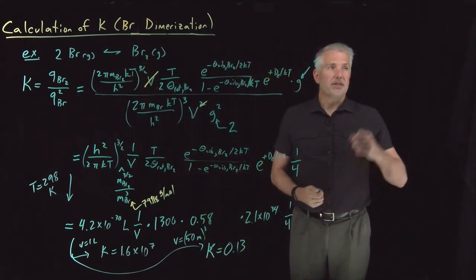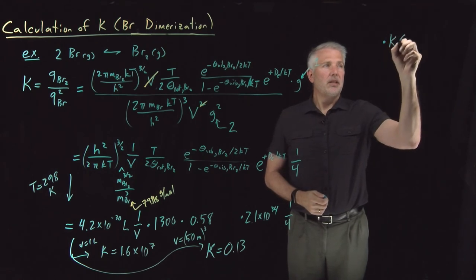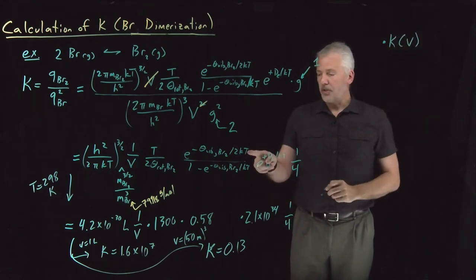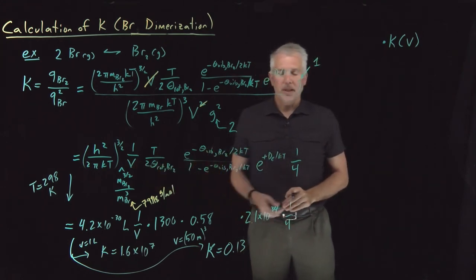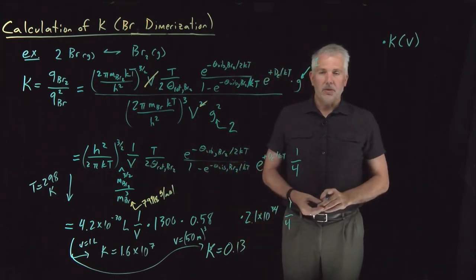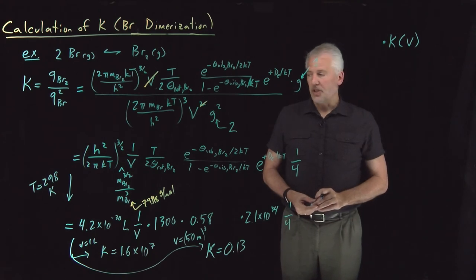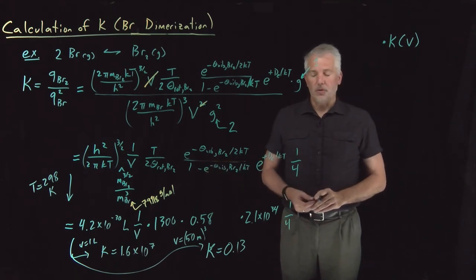So the equilibrium constant depends not only on the temperature in ways that we have seen before, but it also depends on the volume. Being able to calculate the right value of the equilibrium constant will depend on what our reaction conditions are, not just the temperature, but also the volume.